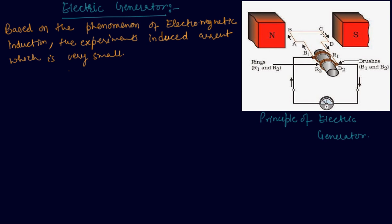This is our rectangular coil ABCD placed between the two poles of a permanent magnet. There are two rings R1 and R2; the inner side of these rings are insulated. The two conducting stationary brushes B1 and B2 are kept pressed separately on the rings R1 and R2.